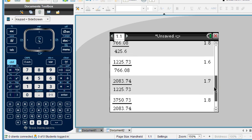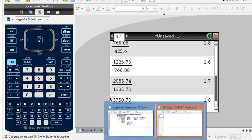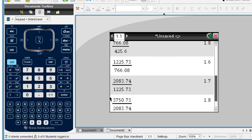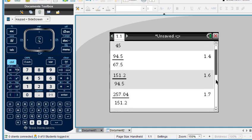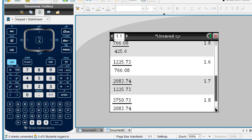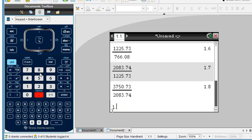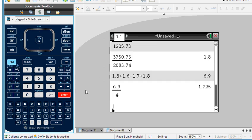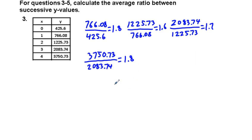And then the last one, we're going to take 3750.73 and divide that by 2083.74, so 1.8. So we've got 1.8, 1.6, 1.7, and 1.8. Let's write this down. So now it asks for the average, right? So we can take 1.8 plus 1.6 plus 1.7 plus 1.8, sum that, and divide that by 4 for an average. So we get 1.725.